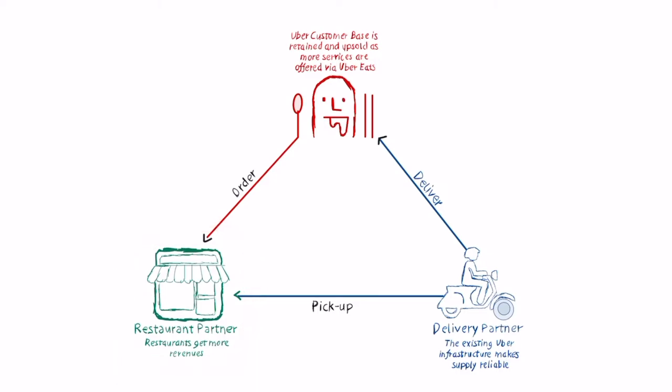The way it works is quite straightforward: the user places an order through the Uber food platform, and then the delivery partner picks up the food and delivers it to the user.